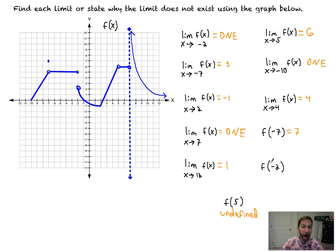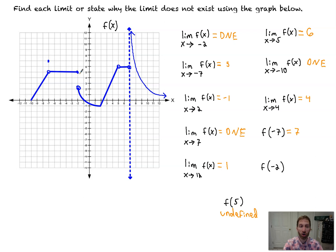f(-2): whereas the limit didn't exist because we approached two different y values as we approached x = -2, there is a defined value of f at negative 2. If you go right to that point, there's an enclosed circle at a y value of 5. An important distinction between the function's value at an x value versus what we approach.